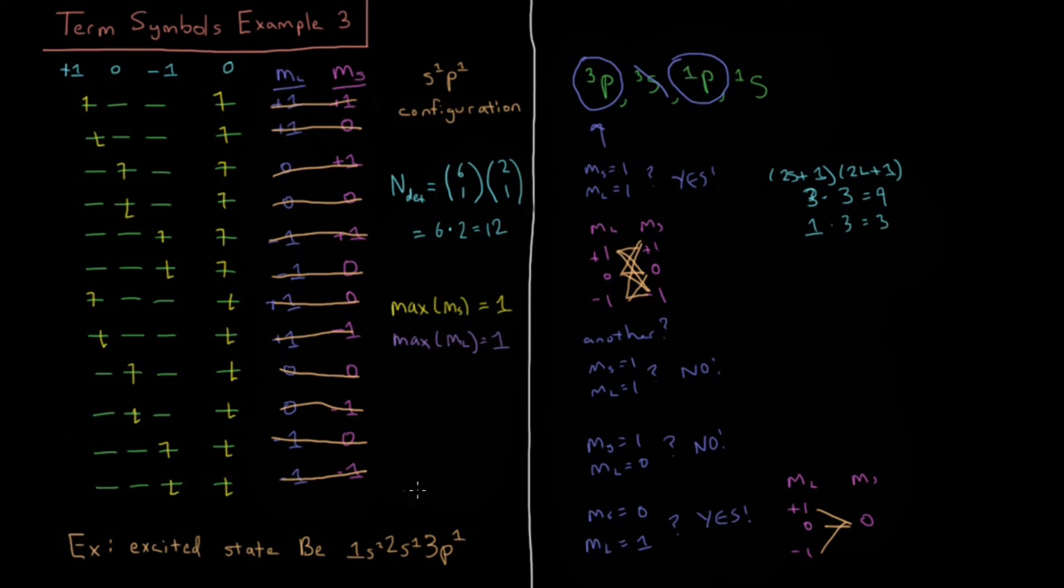So those are those 3. We have found all the determinants that we need for a singlet P, and notice that there are no determinants left. We could also check again if we would find another singlet P. We don't have another singlet P. We also wouldn't have a 0, 0 that we need for the singlet S. So that leaves us with our final term symbols that we're going to have are triplet P and singlet P.